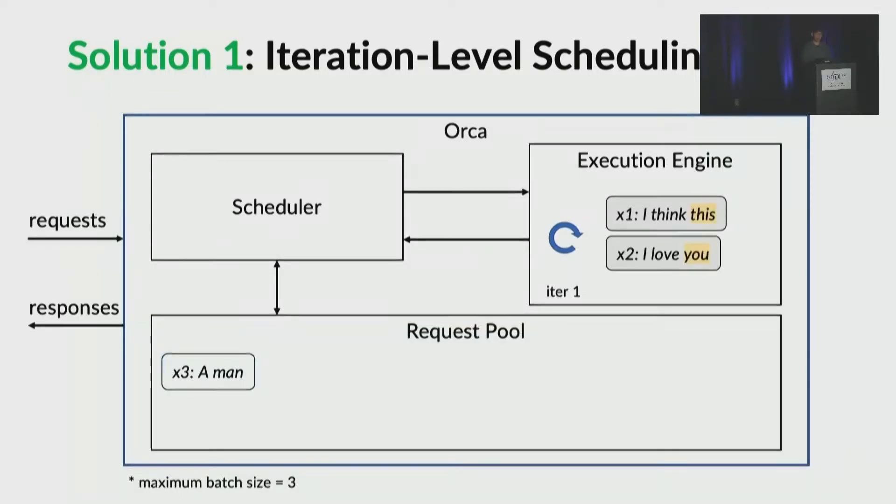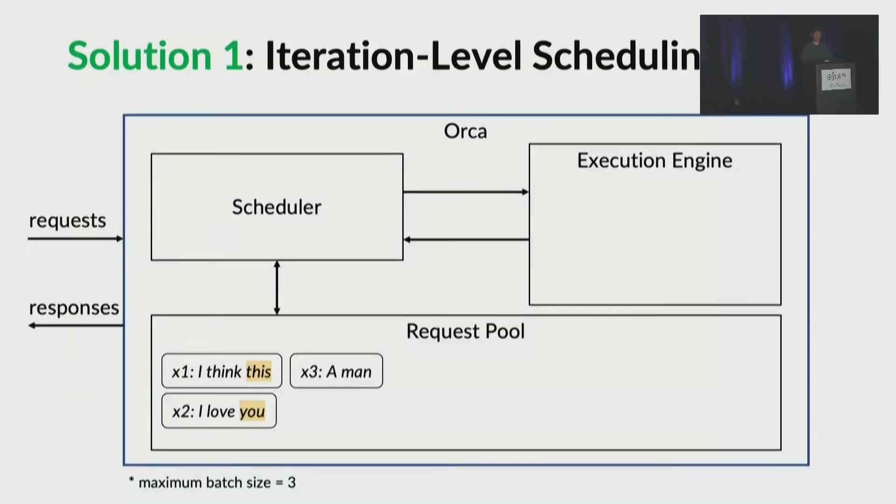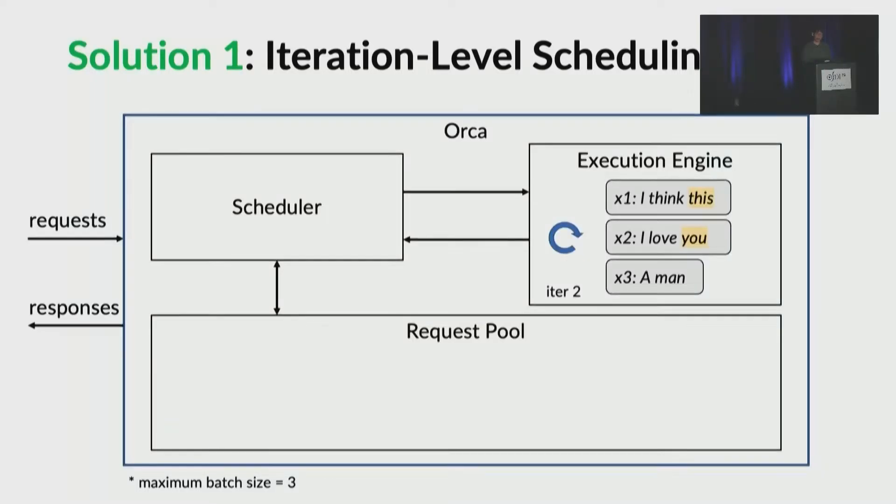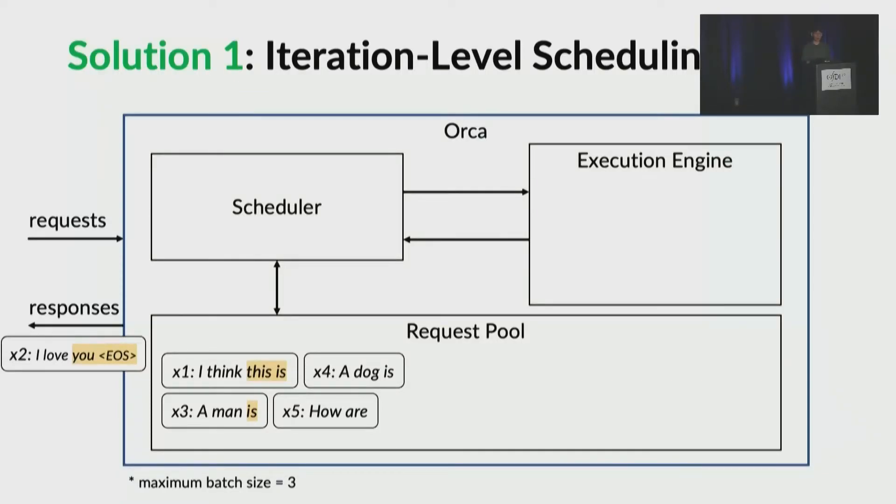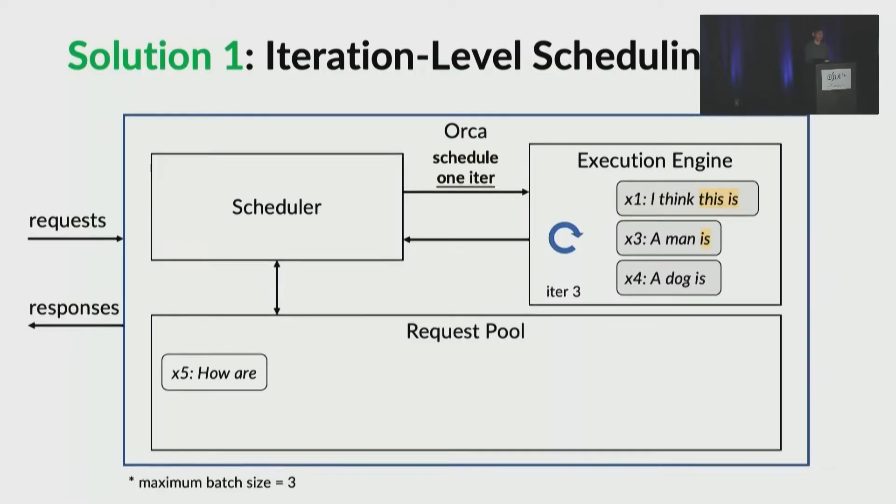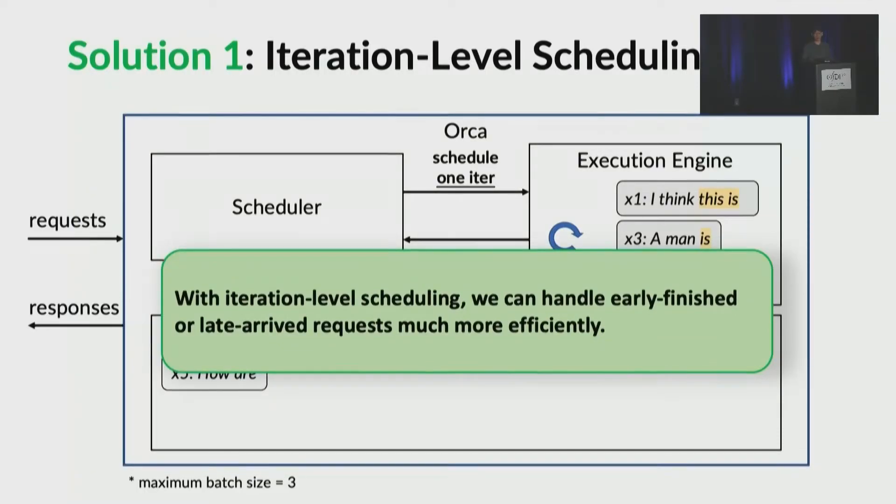Now, we have a new request x3. The execution engine generates tokens for x1 and x2. Now, after that, x1 and x2 return to the request pool. They both have their first output token generated. Next, the scheduler chooses x1, x2, and x3. It sends the batch to the execution engine. Thus, to start processing, x3 does not need to wait for x1 and x2 to end. Now, suppose we have new requests x4 and x5. In iteration two, suppose the engine happens to generate the end of sentence for x2. When the iteration execution for this batch returns, the scheduler can send the response for x2 to the client right away. Now, we have four requests in the request pool. This time, the scheduler selects x1, x3, and x4. The engine processes them. With this technique, we can handle early-finished or late-arriving requests much more efficiently.